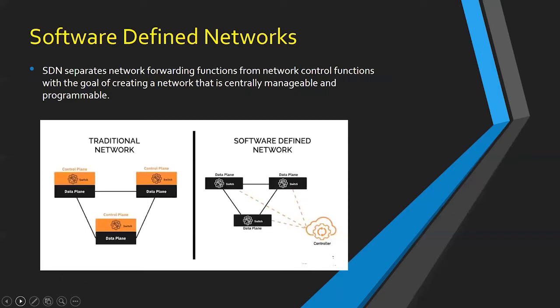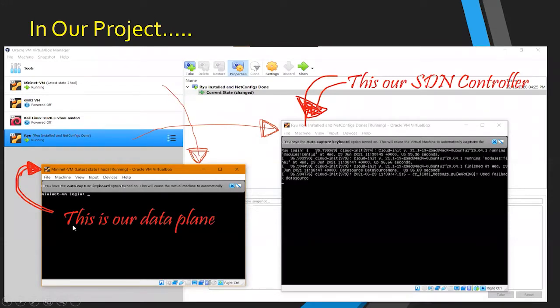Briefly, Software Defined Networks (SDN) separates network forwarding functions from network control functions, with the goal of creating a network that is centrally manageable and programmable. In simple terms, considering a network node such as a network switch, it has a control plane and a data plane. SDN is about the physical separation of the network control plane from the forwarding plane, where the control plane controls several devices.